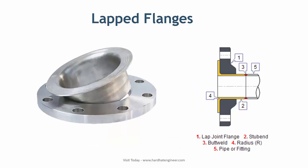Lap flange has two components: a stub end and a loose backing flange. The stub end is butt welded to the pipe and the backing flange freely moves over the pipe. The backing flange can be of a different material than the stub end material — normally carbon steel — to save the cost of the overall piping. Lap flange is used when frequent dismantling is required and the space is constrained.